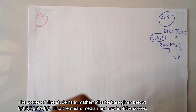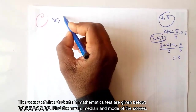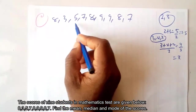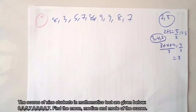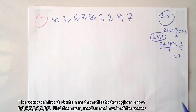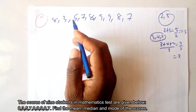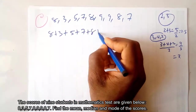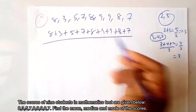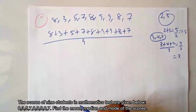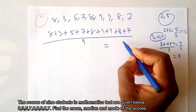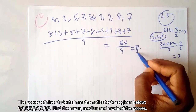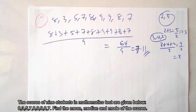For our nine scores — 8, 3, 5, 7, 8, 9, 9, 8, 7 — to find the mean, we add everything and divide by 9. So: 8 + 3 + 5 + 7 + 8 + 9 + 9 + 8 + 7. There are nine values, so we divide by 9. When you add them you get 64 over 9, which equals 7.11. So the mean score is 7.11.